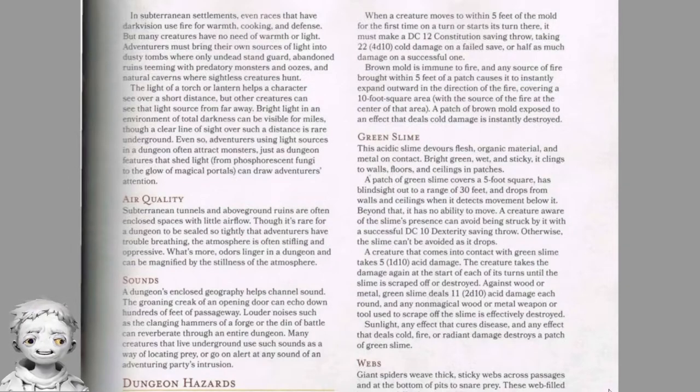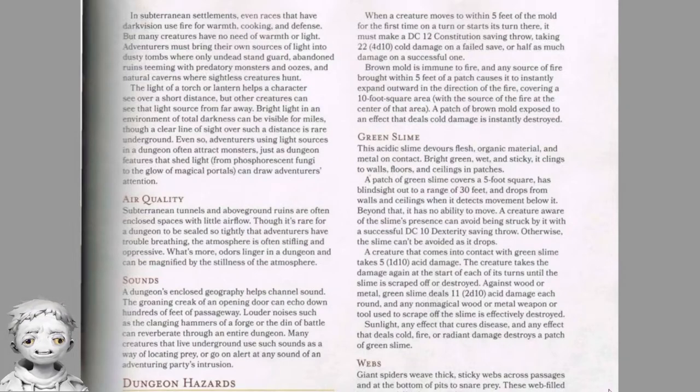Brown mold feeds on warmth, drawing heat from anything around it. A patch typically covers a 10-foot square, and the temperature within 30 feet is always frigid. When a creature moves to within 5 feet of the mold for the first time on a turn or starts its turn there, it must make a DC 12 constitution saving throw, taking 22 (4d10) cold damage on a failed save or half on a success. Brown mold is immune to fire — any fire source brought within 5 feet causes it to instantly expand outward, covering a 10-foot square centered on the fire. Cold damage instantly destroys a patch.